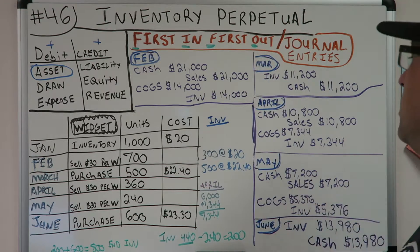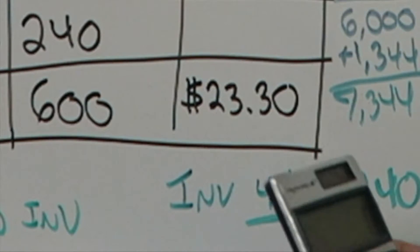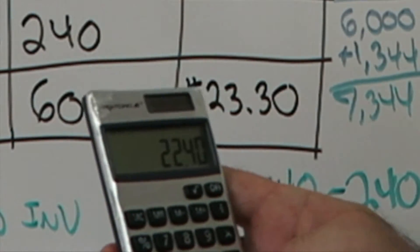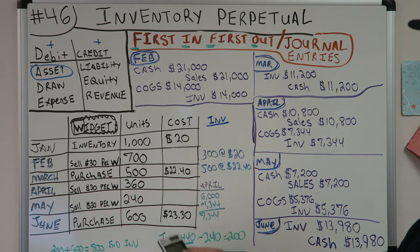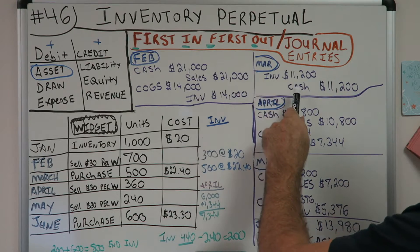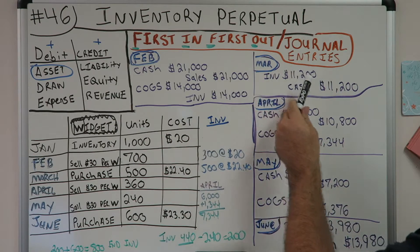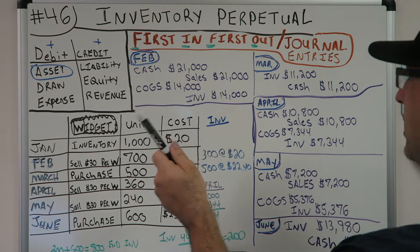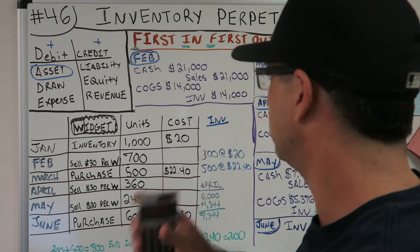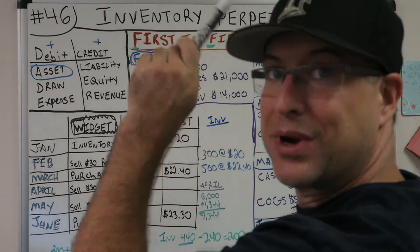Now we're in March. What happened in March? We purchased 500 units at $22.40. 500 times $22.40 equals $11,200. We purchased more inventory — cash is leaving, so that's our credit: $11,200. What are we getting? We're getting widgets — Inventory — that's our debit: $11,200.